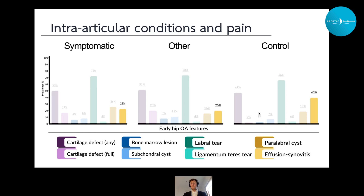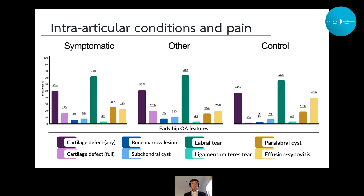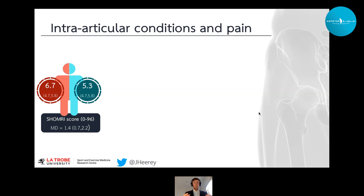An interesting finding was a significantly higher prevalence of effusion synovitis in our control football players. Using non-contrast MRI, we cannot delineate between effusion and synovitis, so we provided a composite measure — an important limitation. This is also cross-sectional data, and we need our longitudinal follow-up to understand whether control football players with these features are more susceptible to developing symptoms over time, and whether these features are associated with symptomatic and functional decline in our symptomatic football players.